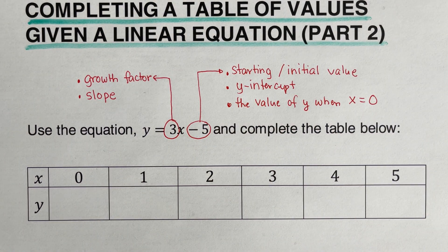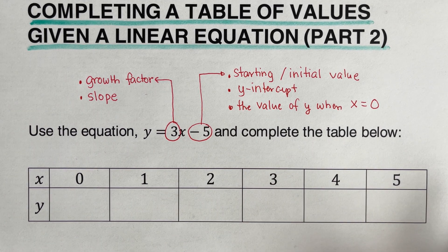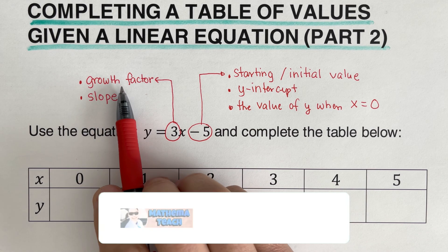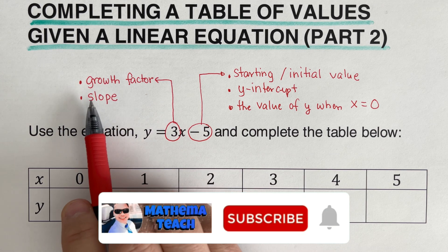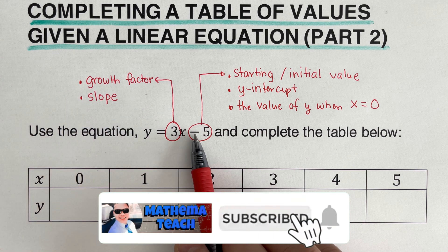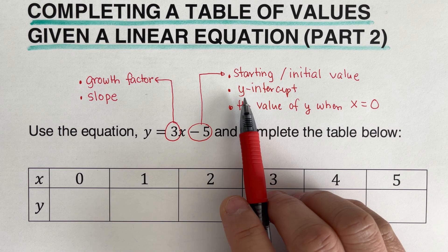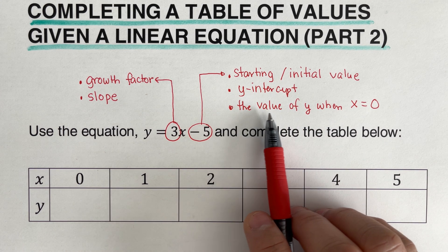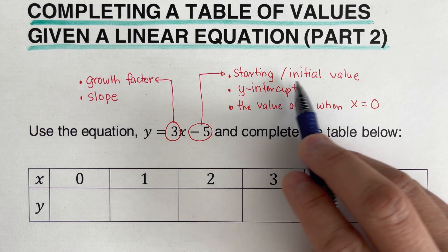To define each of these two numbers again: the 3 is the growth factor, meaning how much it grows by — it's also called the slope. And this negative 5 is the starting or initial value, which in math we call the y-intercept — the value of y when x is zero.